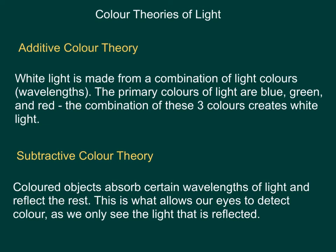So again, those primary colors are blue, green, and red. The combination of these three colors creates white light. On the other hand, the subtractive color theory tells us that colored objects absorb certain wavelengths of light and reflect the rest. This is what allows our eyes to detect color, as we only see the light that is reflected.